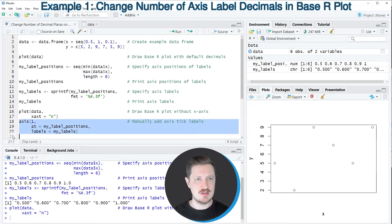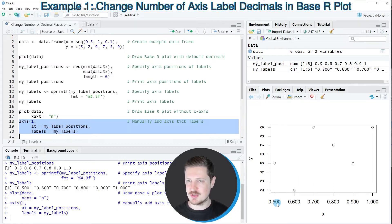So after running lines 18 to 20 of the code, you can see that our plot is updated. And now the x-axis labels have been changed to numbers with many decimal places.